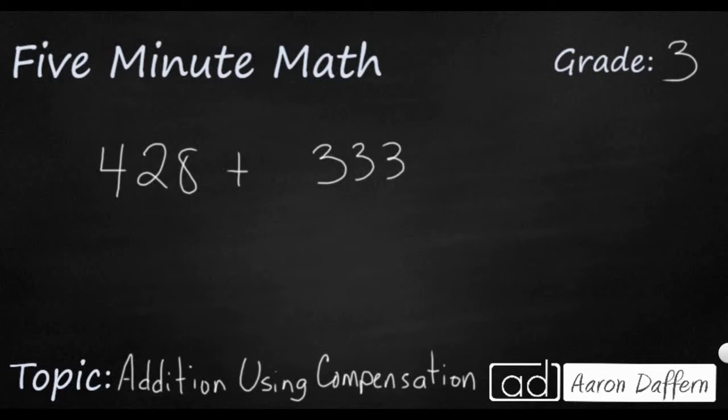So let's take a look at this simple problem here, 428 plus 333. What compensation says is that your two addends, in this case we've got our two numbers right here, 428 and 333, you can redistribute numbers between those two as long as the total stays the same, and you can redistribute the quantities within those two numbers to make it easier to add.